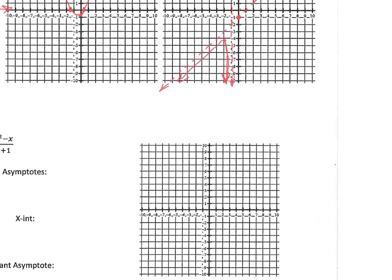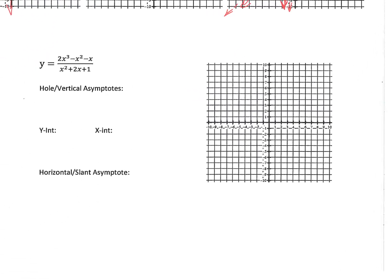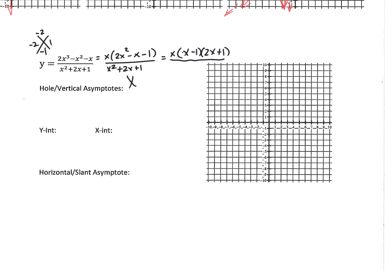So now let's work through an entire problem from beginning to end. Step 1: factor. We pull an x out to get x times (2x² minus x minus 1) over (x² plus 2x plus 1). The numerator factors using slide and divide to give x times (x minus 1) times (2x plus 1). The denominator factors as (x plus 1) squared. Nothing cancels, so we have no holes.